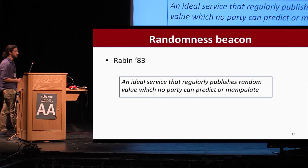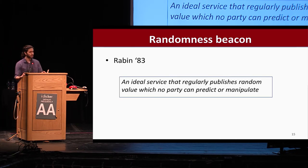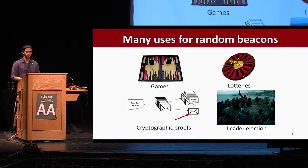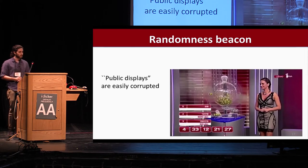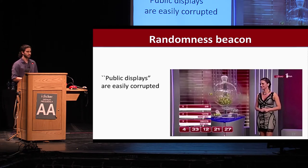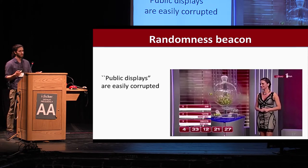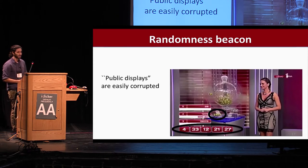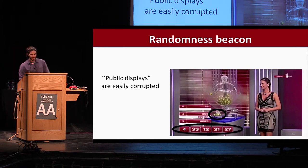What is a randomness beacon? It is a term coined in 1983 by Michael Rabin as an ideal service that regularly publishes random values which no other party can predict or manipulate. There are many uses — most notably running lotteries without a trusted operator or Byzantine agreement protocols. The problem with how randomness beacons are run today is that they rely on public displays of randomness, such as lottery machines with balls, which are easily corruptible. In fact, you can watch a YouTube video where only three balls have come out, but the five winning numbers have already been reported.